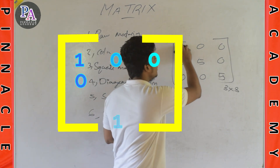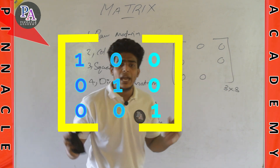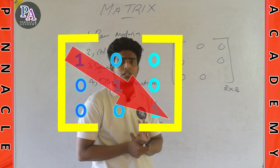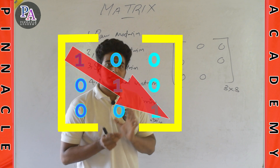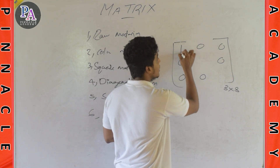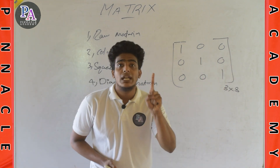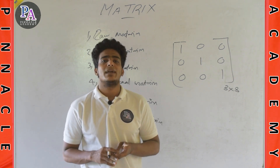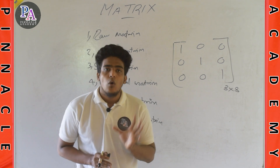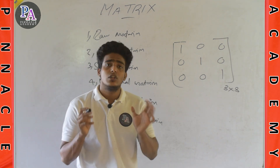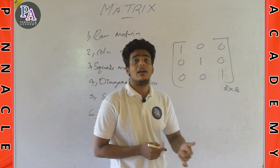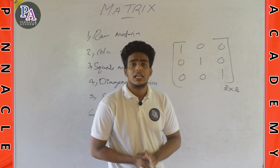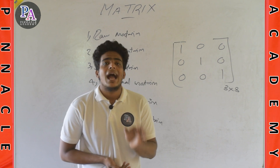If you apply an identity matrix, first thing is: all diagonal elements are 1 and all other elements are 0. It is called an identity matrix. It is a square matrix where elements in the diagonal are all 1 and the rest are 0.